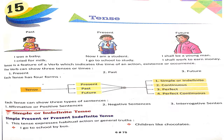With I, we, you, they — only the verb's first form is used. Those who are singular — he, she, it, or the name of one particular person or thing — those are singular subjects. With singular subjects, we add S or ES to the verb's first form.